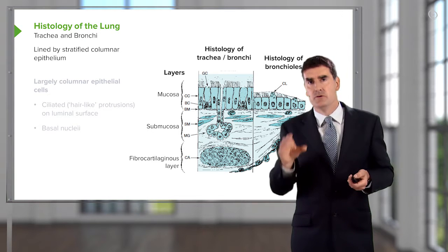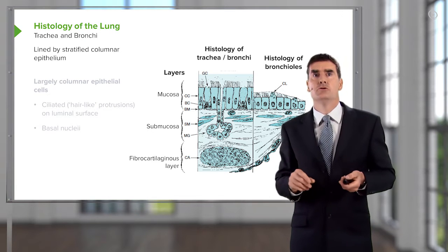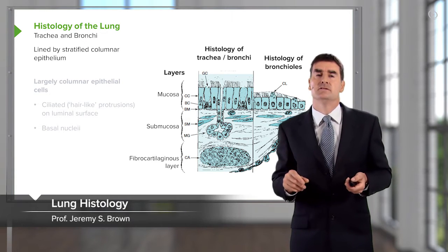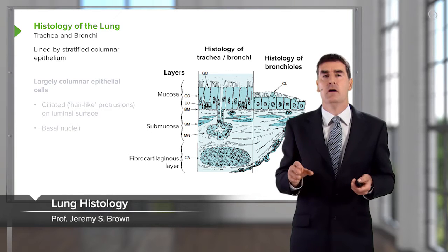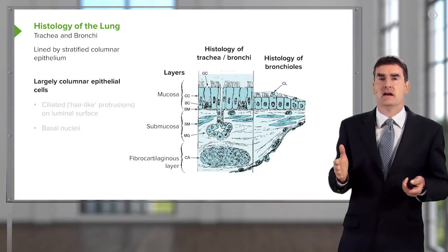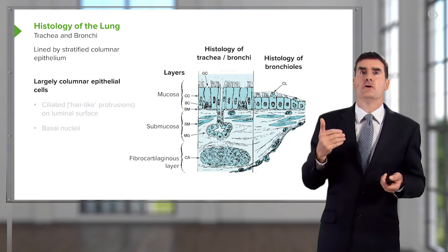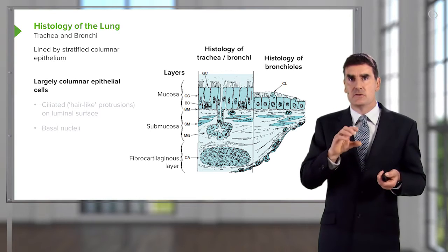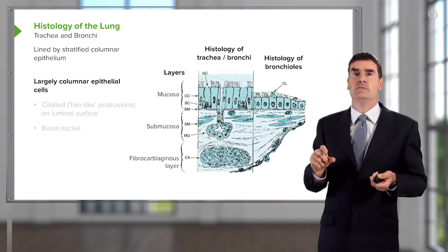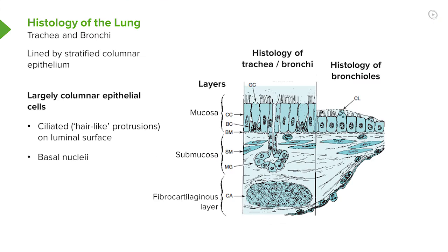So what's the histology of the lung? If you get a microscope and look at the epithelium of the conducting airways, what does it look like? Well, largely the conducting airways will have columnar epithelium — a single layer of cells based on a basement membrane, oblong in shape, with the nucleus tending to sit at the base on the basement membrane, and then cilia projecting out from the surface of the epithelial cell.